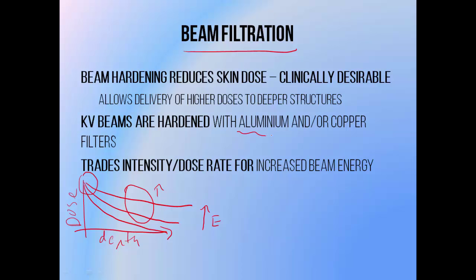While beam filtration removes low-energy components and increases average energy and depth of penetration, it also decreases the dose rate — because the more material the beam passes through, the fewer photons come out the other side. So beam filtration is a trade-off: increasing average beam energy at the expense of dose rate. If taken to extremes, it can make treatment times incredibly long. However, this ratio can be optimised through proper selection of filter materials, which will be discussed in the next tutorial on combination filters.